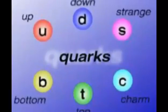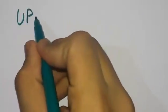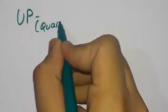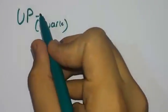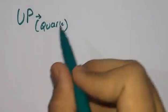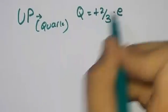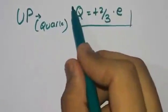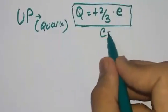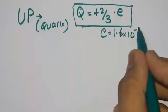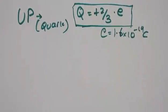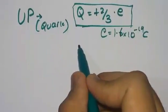First, let's come to the up quark. The up quark has a charge of Q = +2/3 e. If you don't know, e = 1.6 × 10^-19 coulombs. The up quark is present in protons and neutrons.